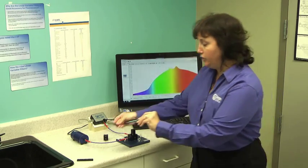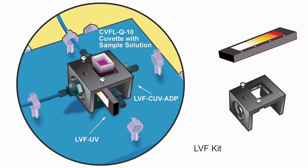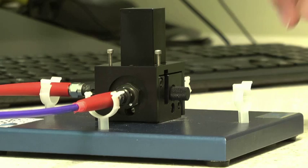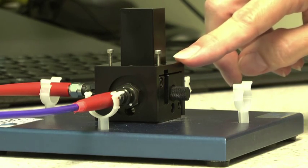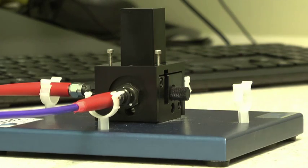So let's take a look at how we use these linear variable filters. In this case, I'll be using the linear variable band pass filter set with our four-way cuvette holder. I've already attached my LVF cuvette adapter to my cuvette holder, and now I'm going to slide my band pass filter into the filter slot that you see here.